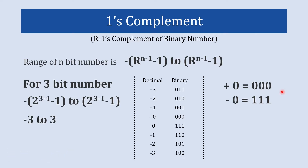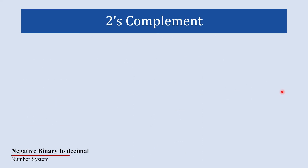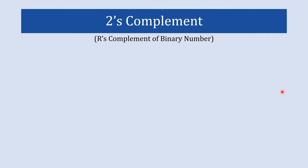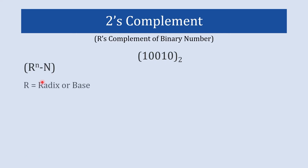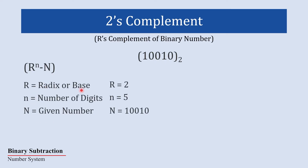Now let's see how to find the 2's complement of a binary number. The 2's complement is basically the r's complement in the binary number system, as seen in our previous video. Here we'll find the 2's complement of the same number. The equation to find 2's complement is r raised to n, minus N — where r is the radix, n is the number of digits, and capital N is the given number.